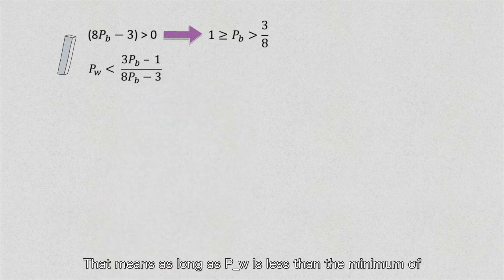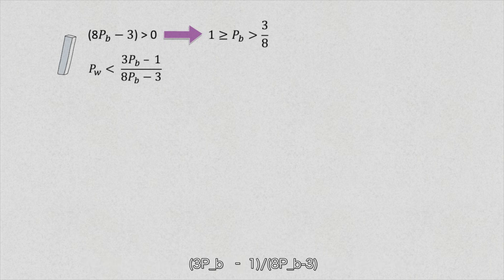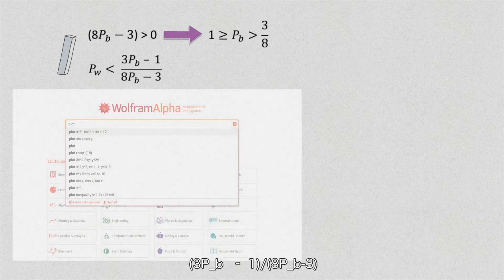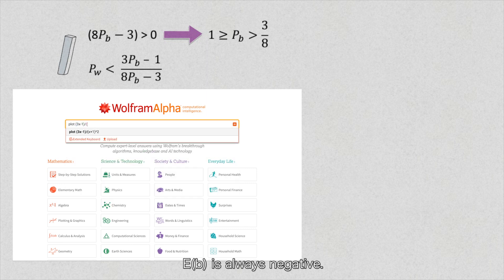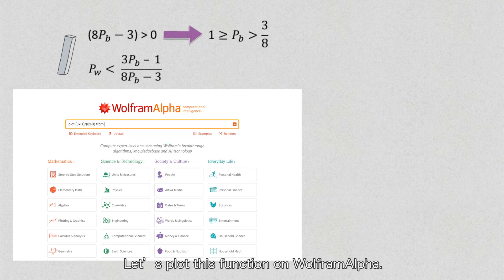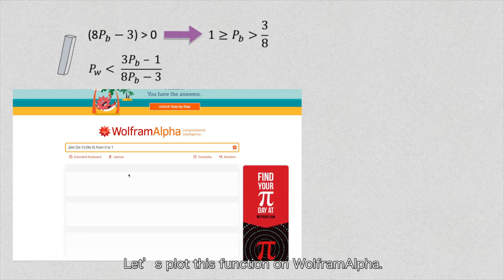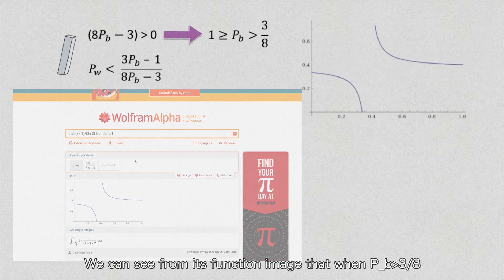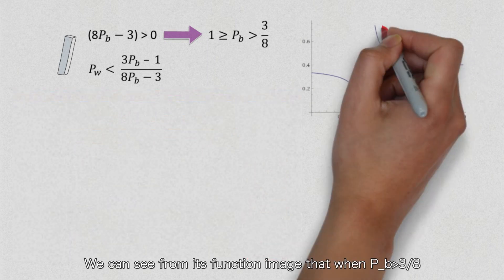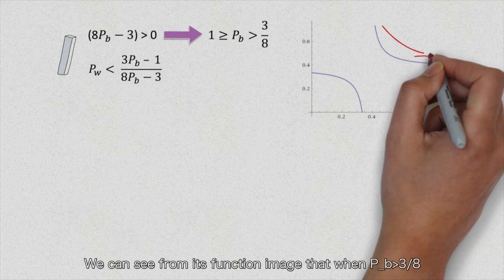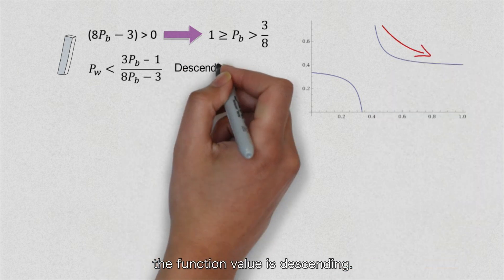Expectation of b is always negative. Let's plot this function on Wolfram Alpha. We can see from this function image that when P_b is larger than 3 over 8, the function value is descending.